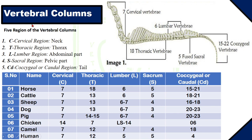There are five regions of the vertebral column: the cervical region, thoracic region, lumbar region, sacral region, and coccygeal or caudal region. This is the formula of the vertebral column for different animals.